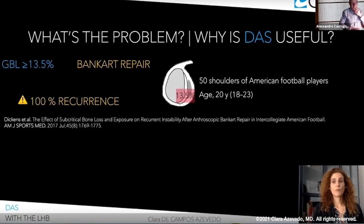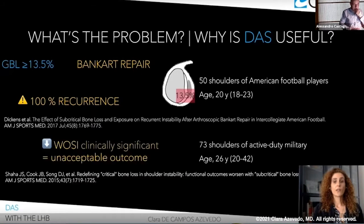It was found to be very important to know the cut-off value for the number of instability events that correlate with subcritical glenoid bone loss. Dickens and co-workers found that there was a 100% recurrence rate in patients with subcritical glenoid bone loss after arthroscopic Bankart repair. On the other hand, Saha and co-workers found that 13.5% glenoid bone loss led to a clinically significant decrease in WASI scores consistent with an unacceptable outcome, even in patients who did not sustain recurrence of their instability.